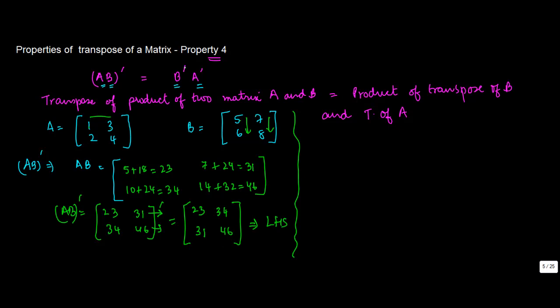Let's do the right-hand computation, which is B transpose into A transpose. So B transpose is equal to 5, 7, 6, 8. Convert this row into column: 5, 7, 6, 8, into A transpose: 1, 3, 2, 4.